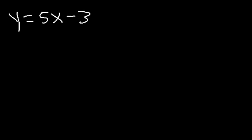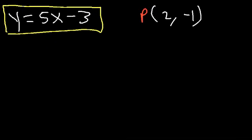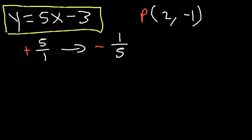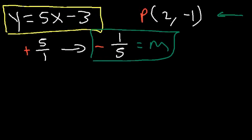Now try this one. Let's say y is equal to 5x minus 3 and we have the point 2, negative 1. You want to write the equation of the line that is perpendicular to y equals 5x minus 3 and passes through the point 2, negative 1. The first thing you need to do is change the slope. For a parallel line the slopes are the same, but if it's perpendicular, the slope changes from 5 over 1 to negative 1 over 5 — you flip the fraction and change the sign. Once you have the slope and a point, you can write the equation.